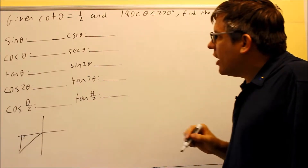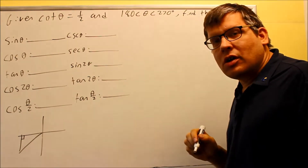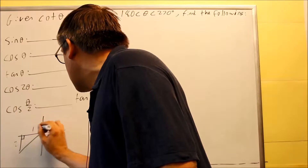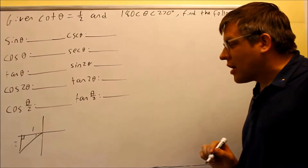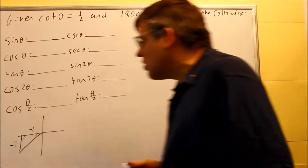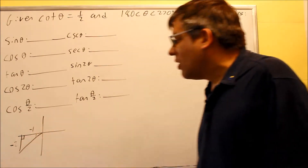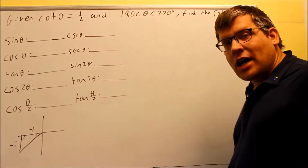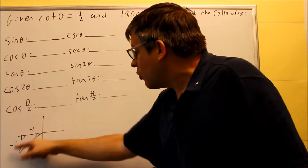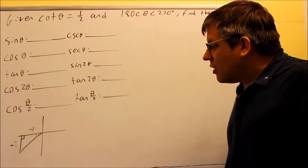Cotangent is the reciprocal of tangent. Tangent is opposite over adjacent, so cotangent is adjacent over opposite. Adjacent would be 1 and the opposite is going to be 2, because our angle is going to be measured from the x-axis. You need to put a negative sign next to each of these, because in the third quadrant this will have a negative x value and a negative y value. So both are negative, and negative 1 over negative 2 equals 1 half.